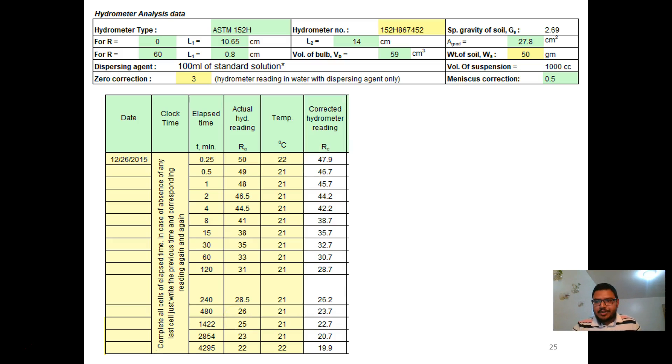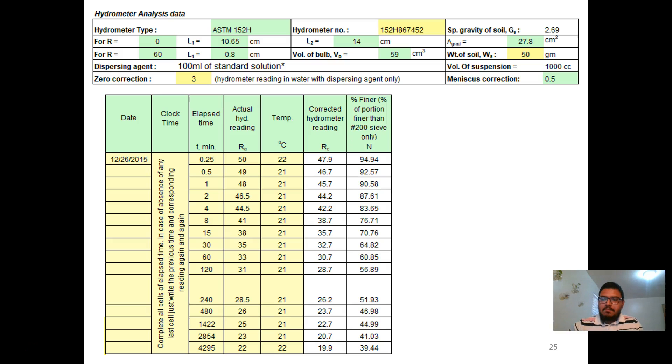Corrected hydrometer reading and temperature. The corrected hydrometer reading can be obtained by applying correction factors. Percent finer can be determined from corrected hydrometer readings and weight of soil solids.